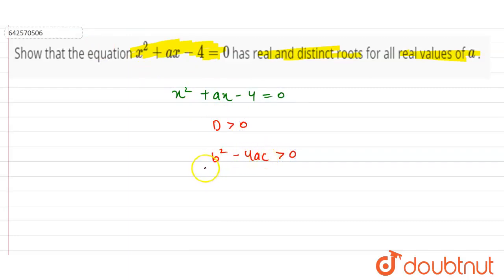Here b is the coefficient of x, a is the coefficient of x squared and c is the constant. Now in the given question, the value of b is a and the value of a is 1 and the value of c is minus 4.